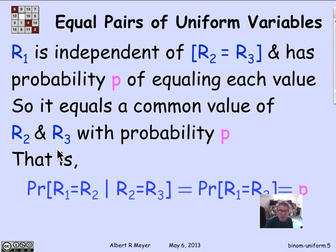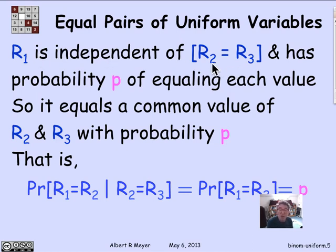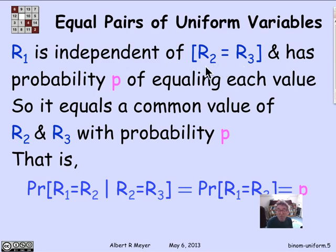Let me give a hand-waving argument; there's a more rigorous argument based on total probability that appears as a problem in the text. The intuitive idea: R1 is the uniform variable and is independent of R2 and R3, so R1 is independent of the event that R2 equals R3. Because R1 is uniform, it has probability P of equaling every possible value it can take. Since R2 and R3 only take values R1 could take, the probability that R1 hits the value R2 and R3 happen to have is still P.